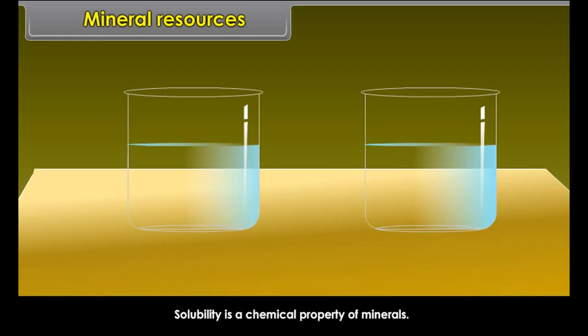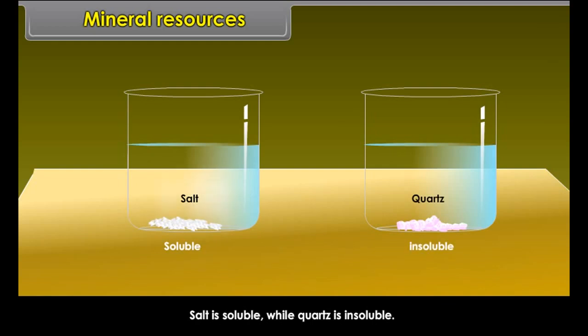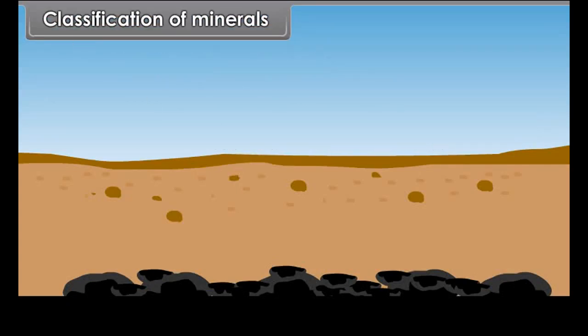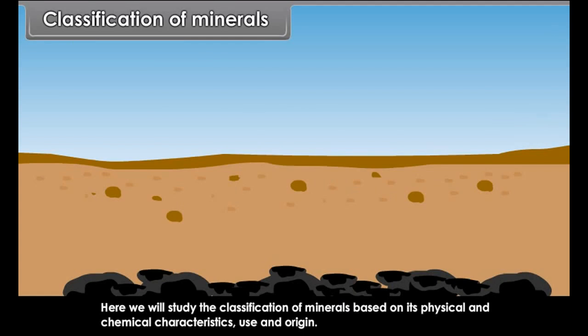Solubility is a chemical property of minerals. For example, salt is soluble while quartz is insoluble. Here we will study the classification of minerals based on its physical and chemical characteristics, use and origin.